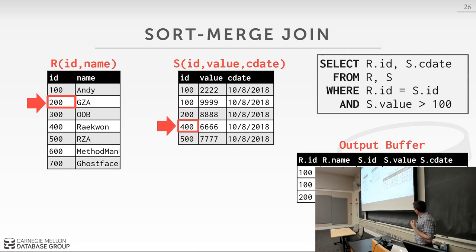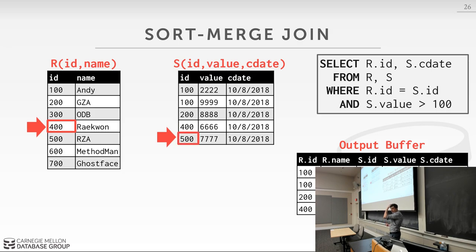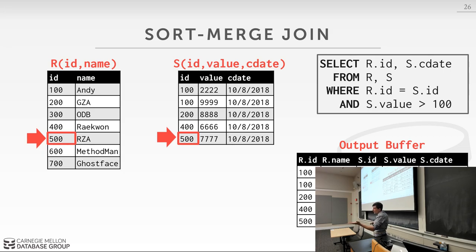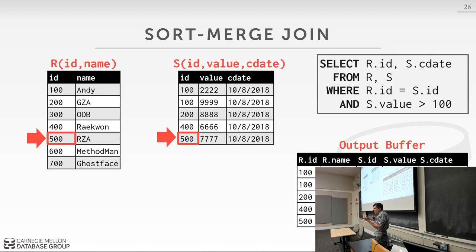Once we reach the end of the inner table, we're done — we don't backtrack. It's worth noting this example works cleanly because the join key is a primary key (one-to-many relationship). If it's a many-to-many relationship, you'd have to backtrack on the inner table as you advance on the outer table. You'd need to maintain metadata about where to reset the inner cursor to the start of matching values. But at a high level, you never backtrack on the outer table — only on the inner table.